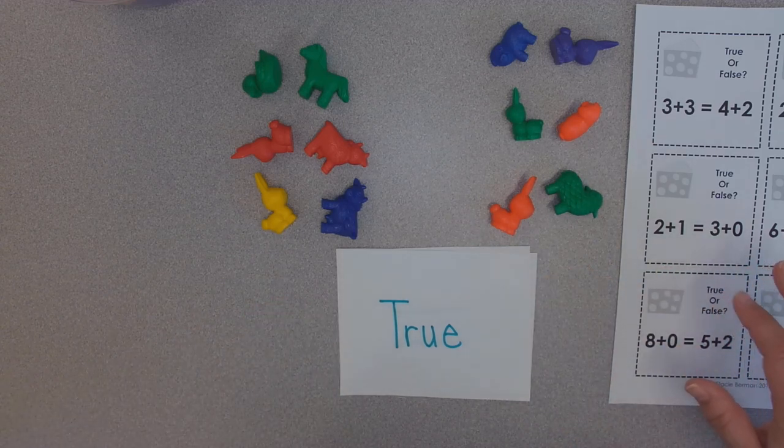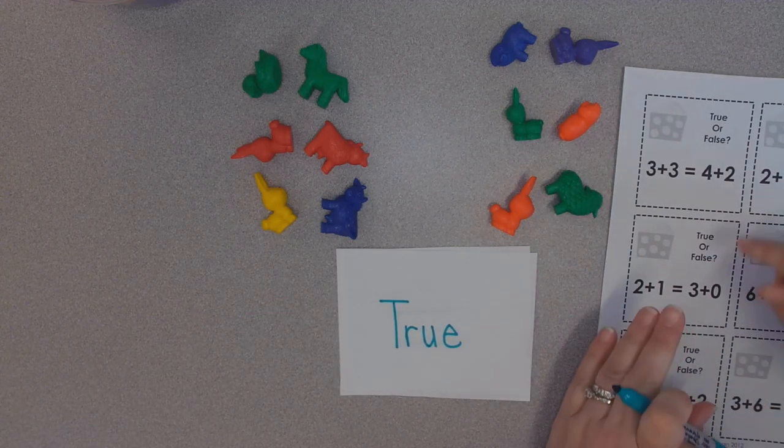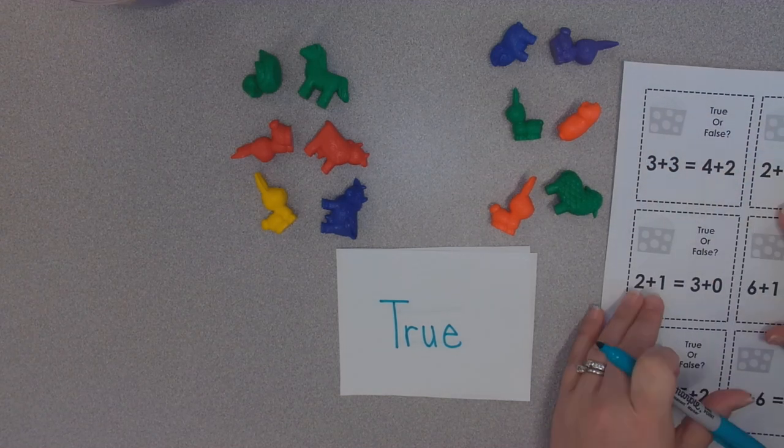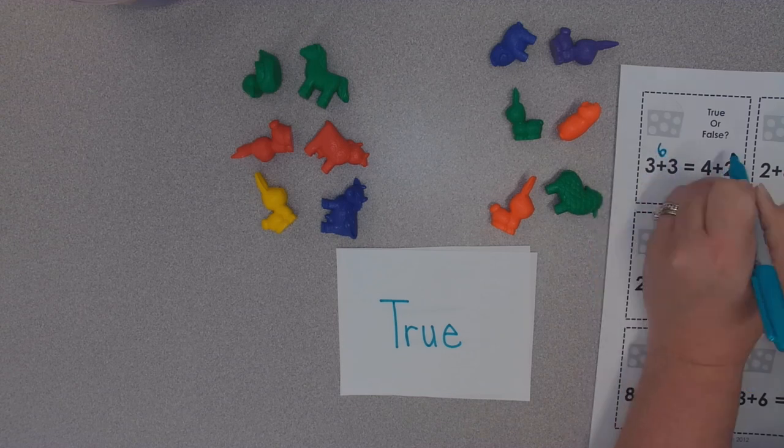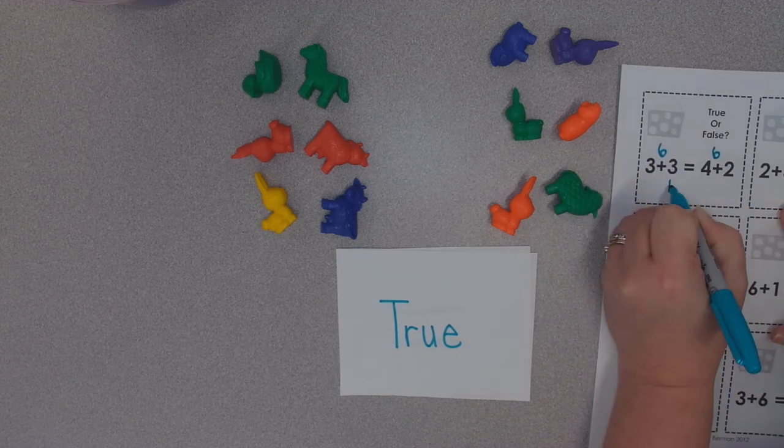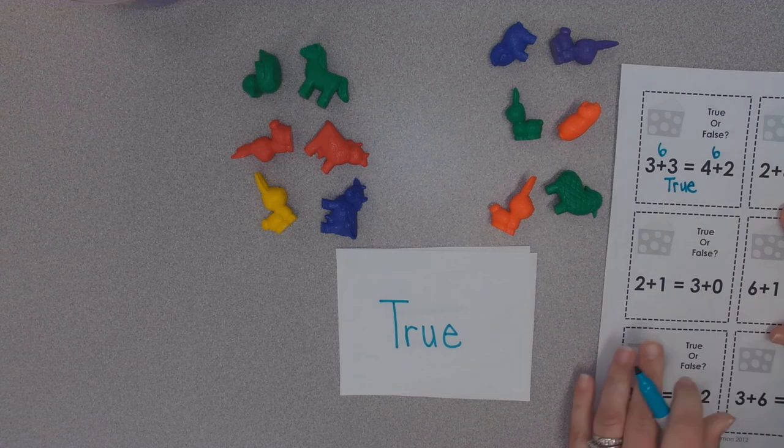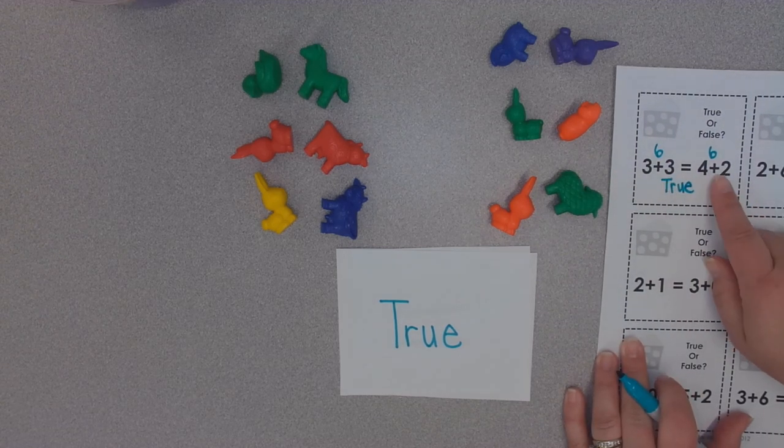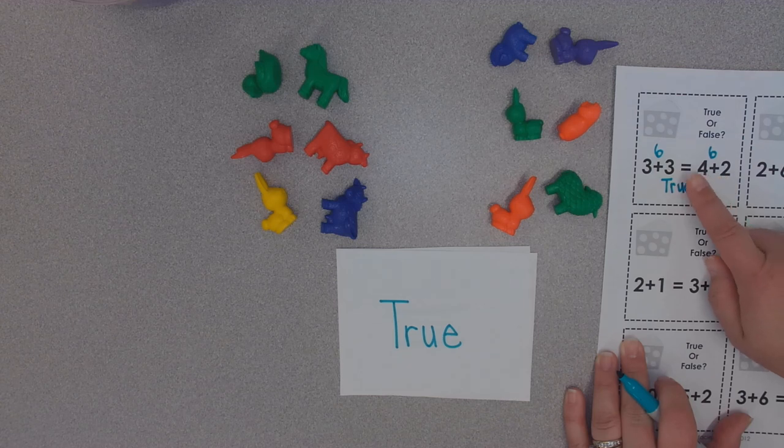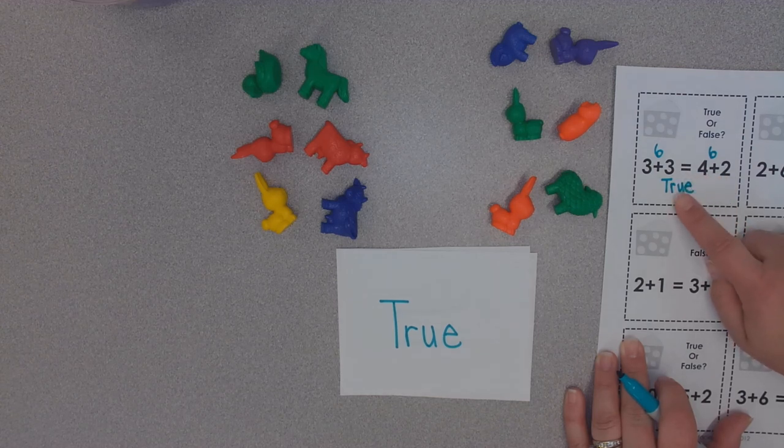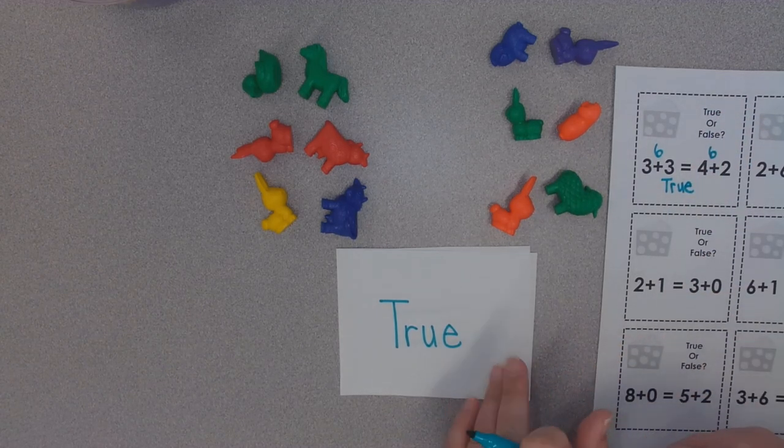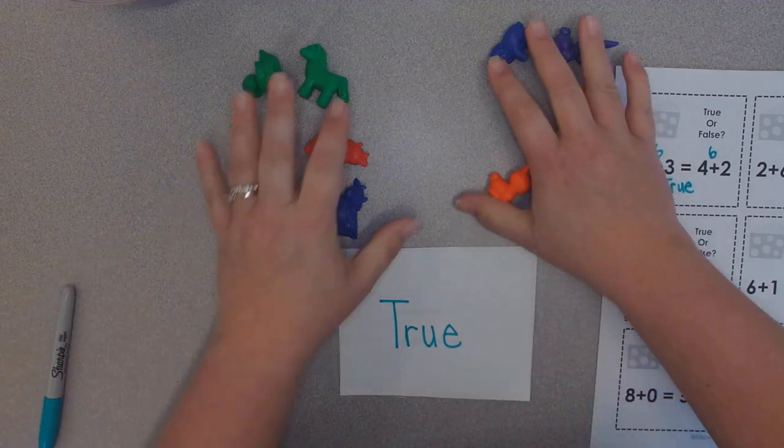They are equal and equal means true. So on your papers, you can see the words here, true or false. This one is true. We know this was 6. We know this was 6. We know this is true. So when you are doing this page, you can add up the different sides. See if it is equal or not equal. And then choose the true word for equal or the false word for not equal. Let's try one more so that you can get the hang of this.